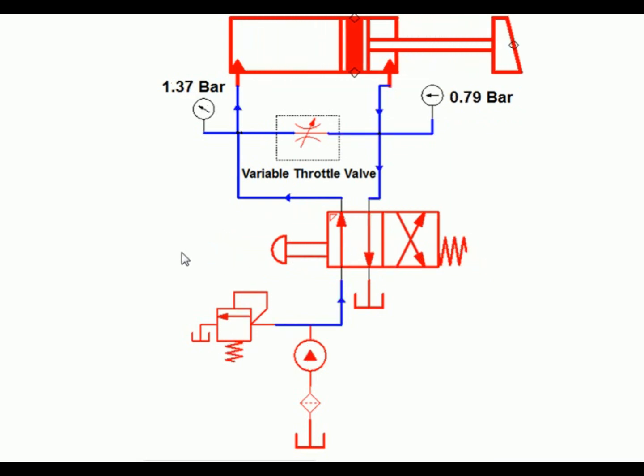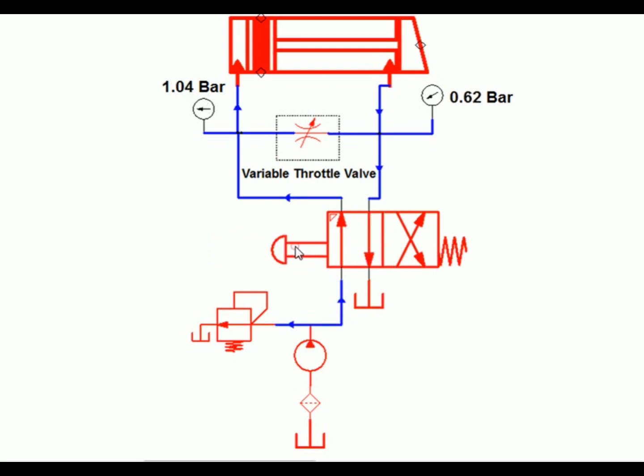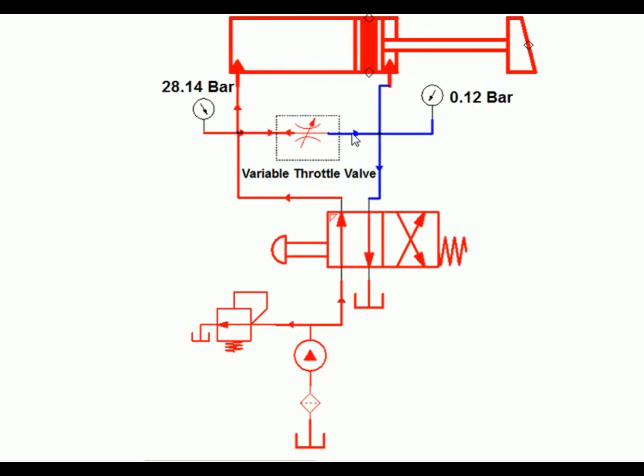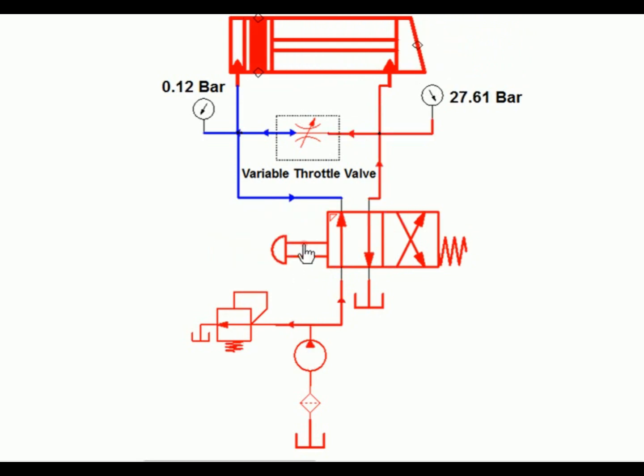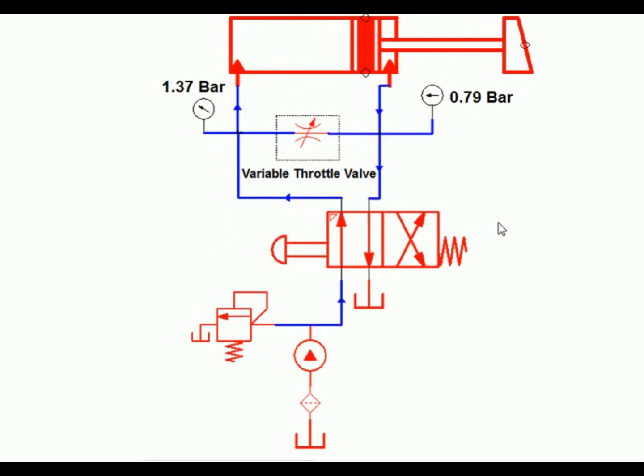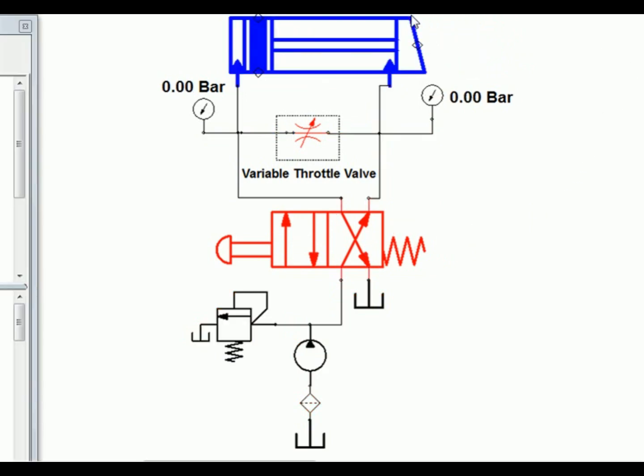The main difference between a bleed off circuit and a meter in or meter out circuit is that in a bleed off circuit, opening the flow control valve to directly send fluid to tank decreases the speed of the actuator.